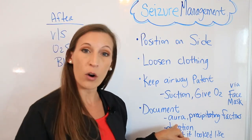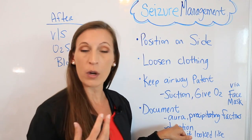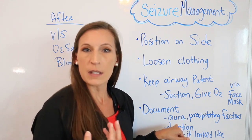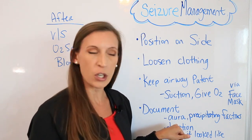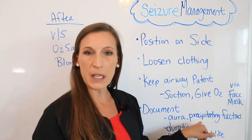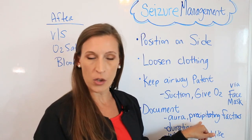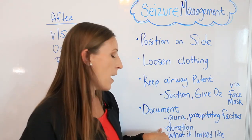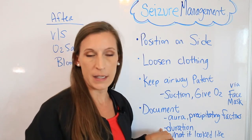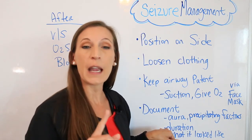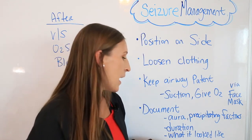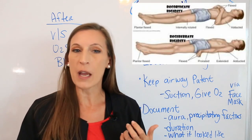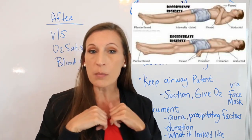Document any auras — a smell, a color, or something the patient notices that happens right before a seizure. Also document any precipitating factors: what happened right before the seizure, how long it lasted, and the start and end time.